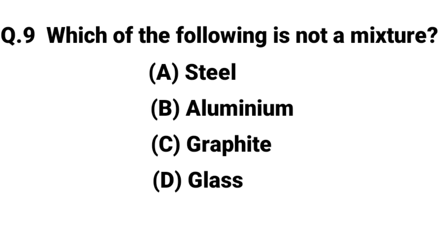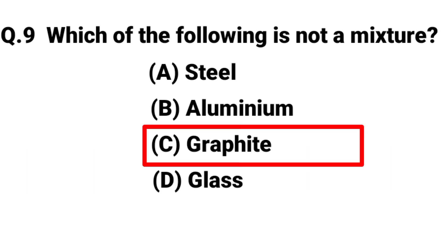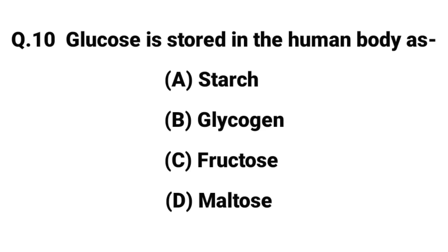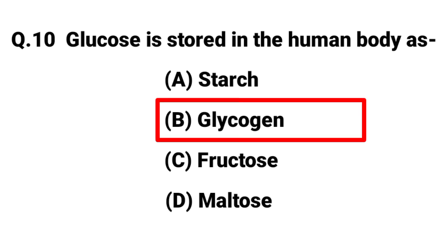Question number nine: which of the following is not a mixture? Answer: C, graphite. Question number ten: glucose is stored in the human body as. Answer: B, glycogen.